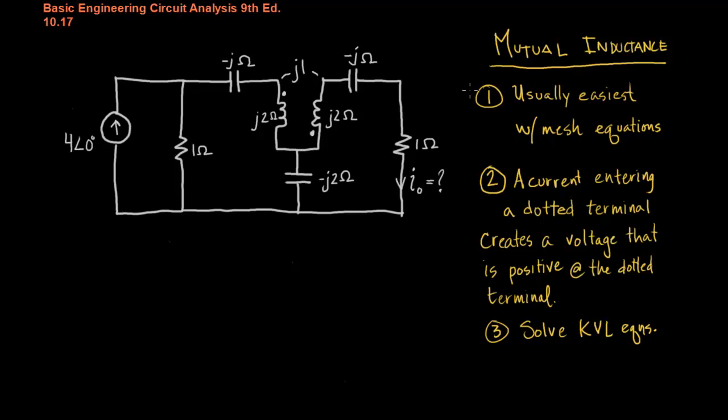First of all, usually we're going to apply mesh equations to solve, and this is the big rule that you want to remember. A current entering the dotted terminal of a magnetically coupled inductor will create a voltage in the opposite inductor such that the positive side of the voltage is on the dotted terminal, and that works vice versa. If the current were to enter the undotted terminal on one inductor, then the voltage would be positive on the undotted terminal of the other inductor. Finally, you write your KVL equations keeping that in mind and solve them, and you're hopefully always going to have some mutual inductance given to you.